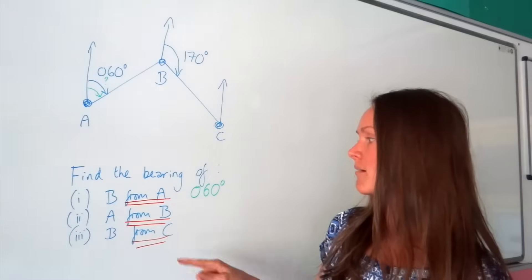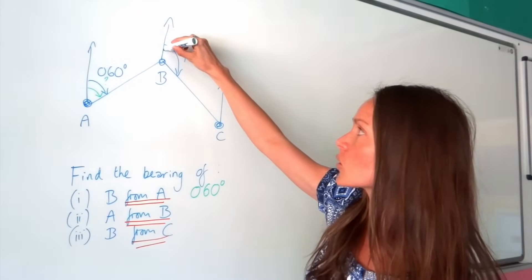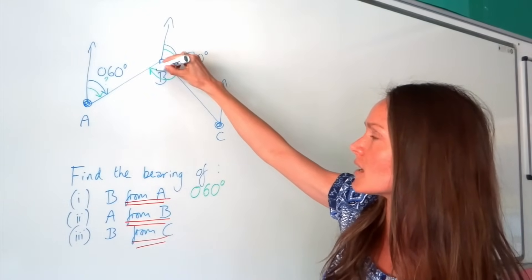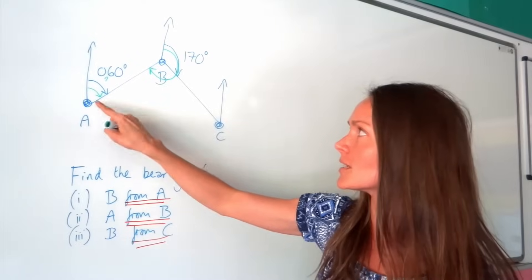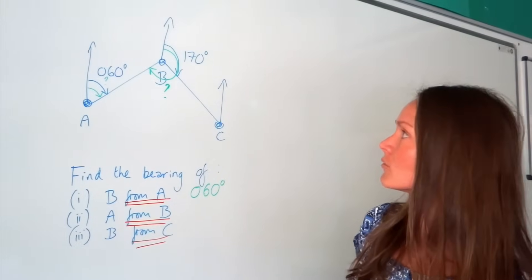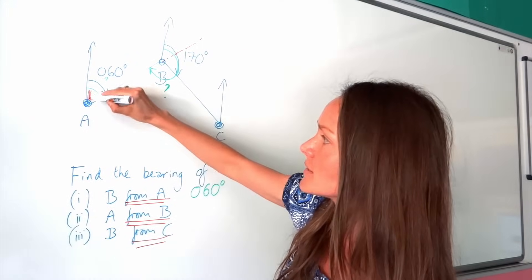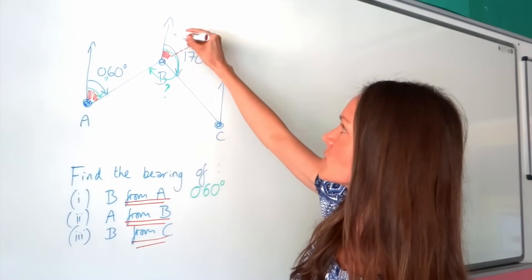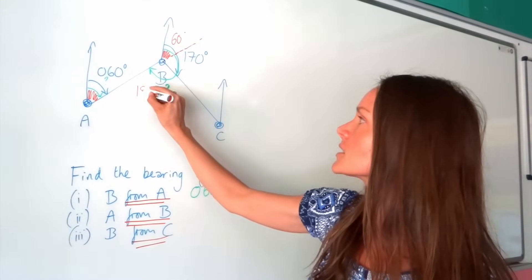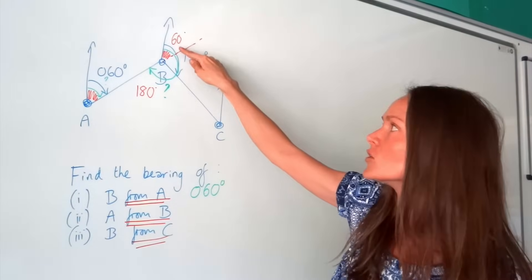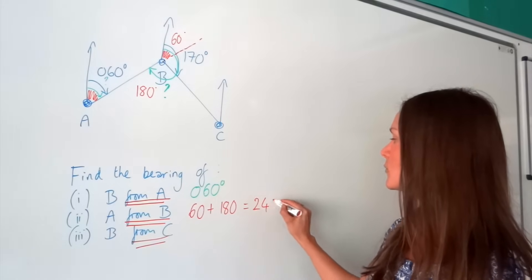Part two: find the bearing of A from B. Put your pen on the north arrow of B and turn clockwise around point B until you hit the line travelling to A — keep going all the way around. Extending the straight line shows a corresponding angle of 60 degrees. Adding that 60 degrees to the straight line of 180 degrees gives the bearing of A from B as 240 degrees.